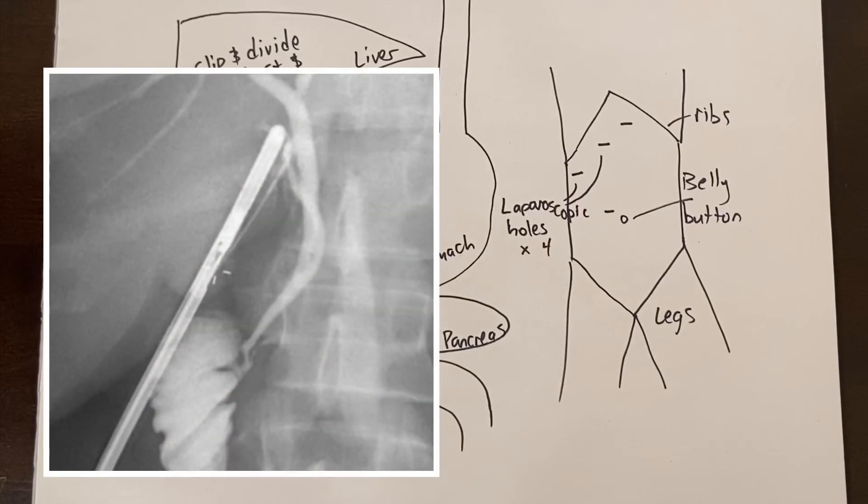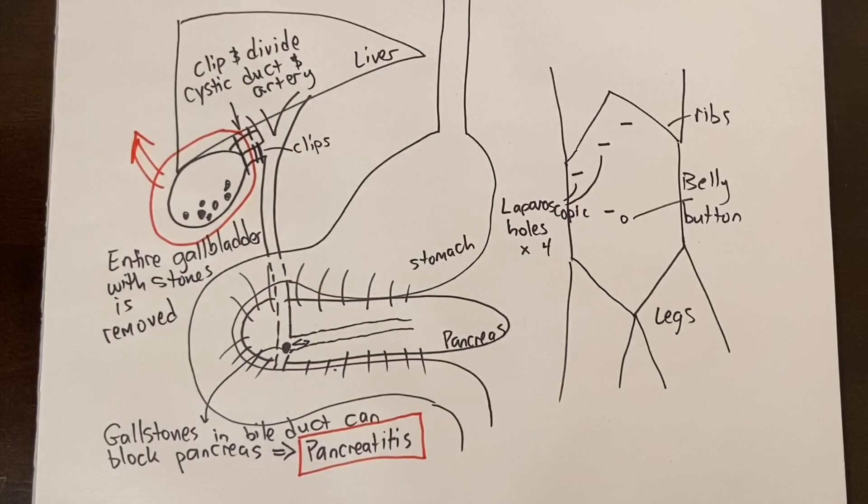Sometimes we inject dye into the cystic duct to light up the main bile duct drainage during the surgery and this is called a cholangiogram. We do this to confirm anatomy or to check to be sure no stones are stuck in the main bile duct at the time of surgery.